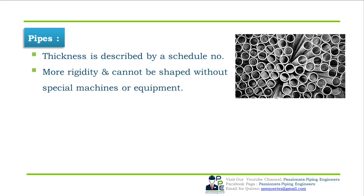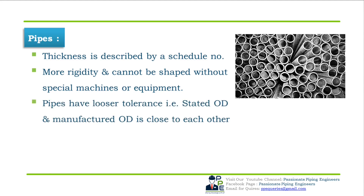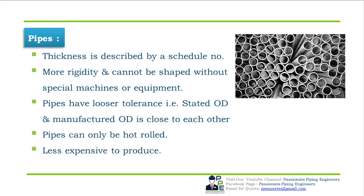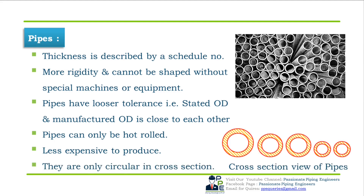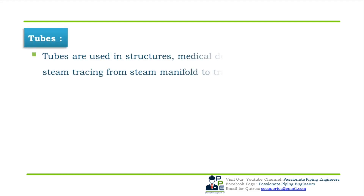Pipes are more rigid and cannot be shaped without special machines or equipment. Pipes have looser tolerances — that is, the stated OD and manufactured OD are usually close but approximate to each other. Pipes can only be hot rolled; they are less expensive to produce. They are only circular in cross-section.